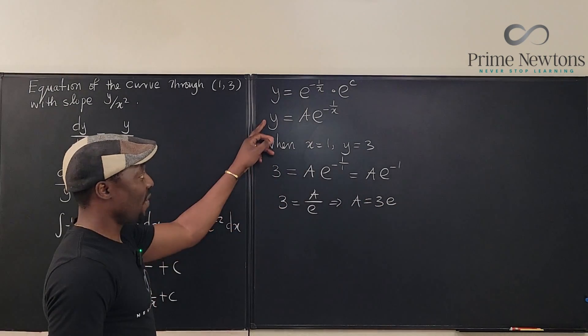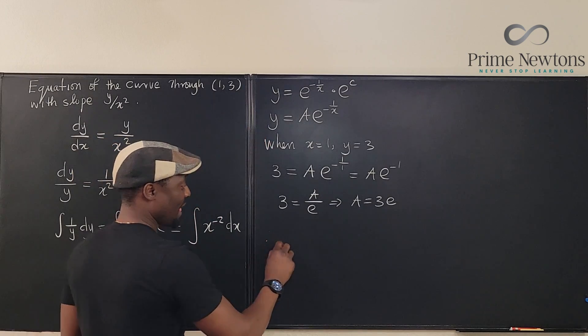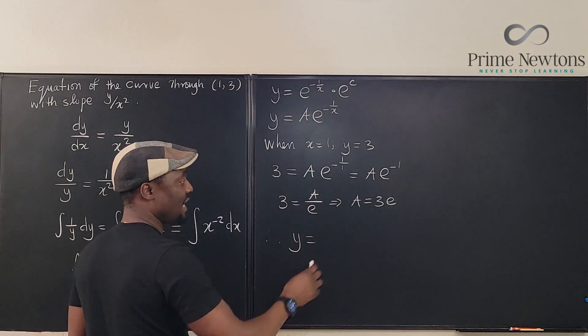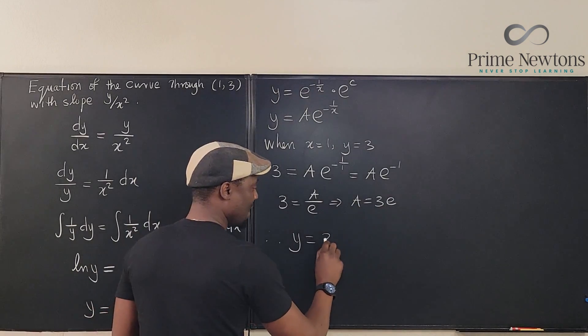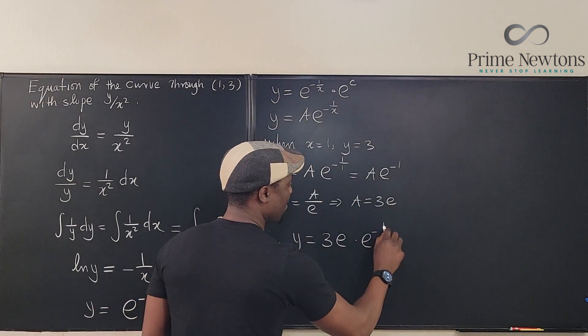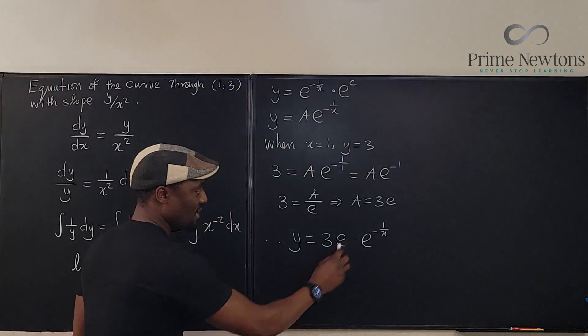We can go back now and say, therefore, y is equal to a times e to the 1 over x. But a is 3e, so it's 3e times e to the negative 1 over x. So, see, this is 1.